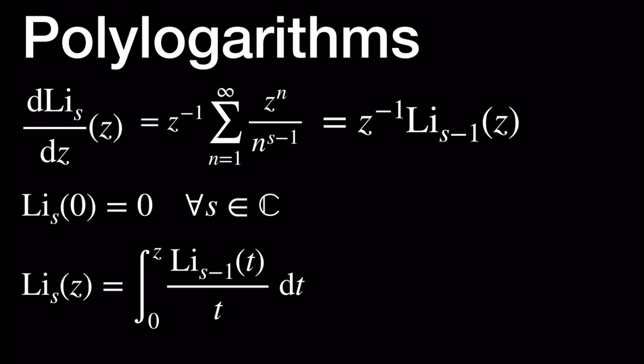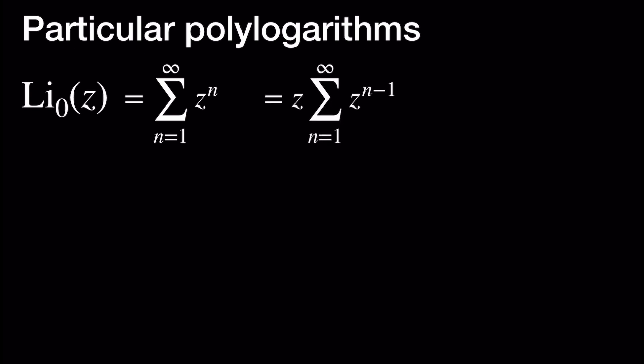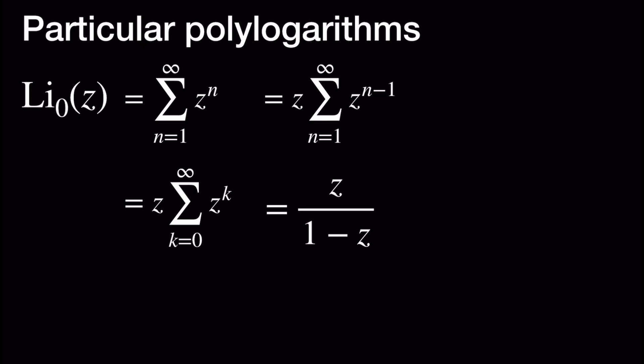Now let's look at some particular polylogarithms. Let's look at the polylogarithm of order 0. Li sub 0 at Z is equal to the sum as n goes from 1 to infinity of Z to the n. This is a geometric series. We can write it as Z times the sum as K goes from 0 to infinity of Z to the K, so the sum of the series is simply Z divided by 1 minus Z.